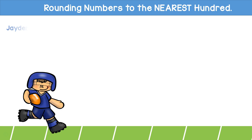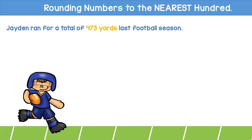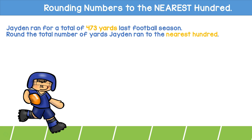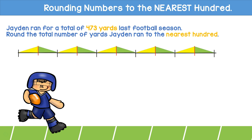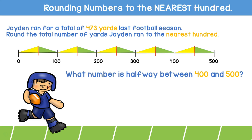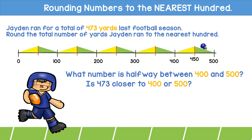Now let's try rounding numbers to the nearest hundred. Jayden ran for a total of 473 yards last football season. Round the total number of yards Jayden ran to the nearest hundred. Again, we're starting with the number line but this time we'll count by hundreds. 473 is greater than 400 but less than 500. What number is halfway between those two? 450. Is 473 closer to 400 or 500? I can see here on the number line that 473 is greater than the halfway point of 450, so 473 is closer to 500.